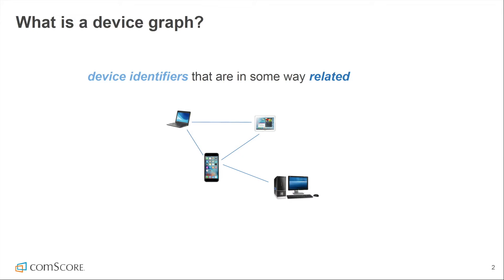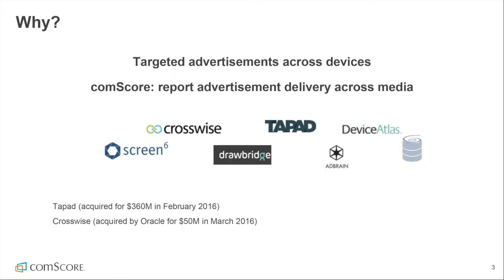Relationships associate device IDs that belong to the same user, family members, or larger communities. Internet device graphs are not abstract concepts, but in practice real-world data sets constructed by real companies. Companies use device graphs to target advertisements to users across devices and enhance the cross-device user experience.